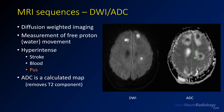The ADC is a calculated value that comes from your diffusion weighted imaging. It reduces much of the T2 component to give you a true diffusion value, so you're much less likely to see T2 shine-through effects. When something is dark on the ADC, it truly reflects reduced diffusion.